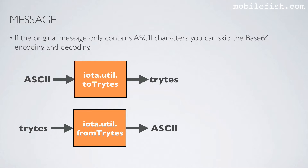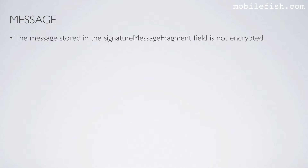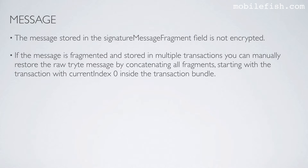If the original message only contains ASCII characters, you can skip the base64 encoding and decoding. The iota.util.toTrytes method uses ASCII values as input and converts to trits. The iota.util.fromTrytes method uses trits as input and converts them into ASCII values. The message stored in the signature message fragment field is not encrypted. If the message is fragmented and stored in multiple transactions, you can manually restore the raw trit message by concatenating all fragments starting with the transaction at current index 0 inside the transaction bundle.